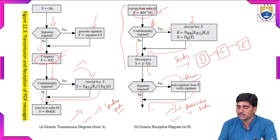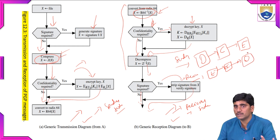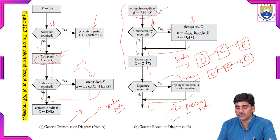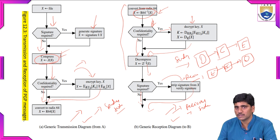At the receiver side, it is first decrypted, then decompressed, then the digital signature is verified. This is how the message or mail is received by the receiver by providing PGP security services like authentication, confidentiality, and compression — along with digital signature, encryption, and segmentation.